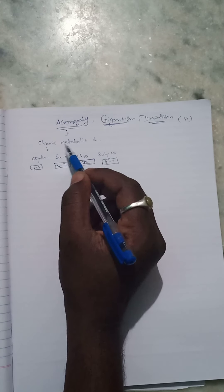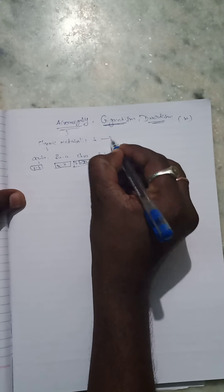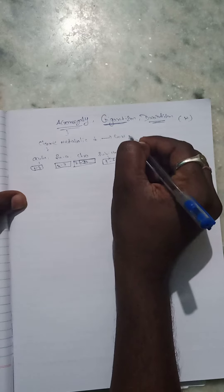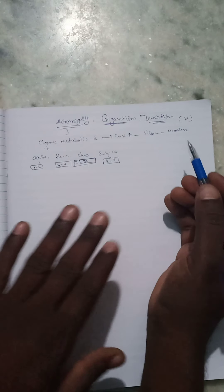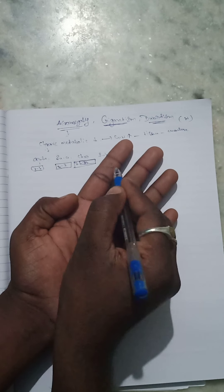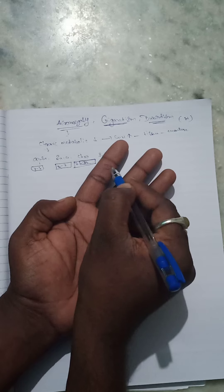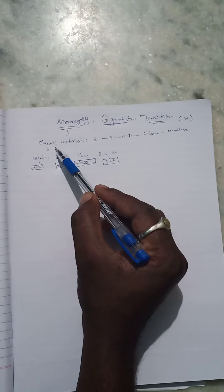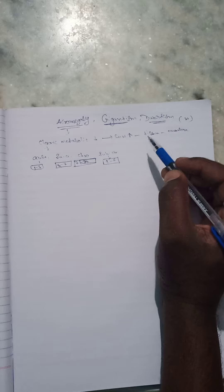Acromegaly is a chronic metabolic disorder in which growth hormone increases too much in the body, and body tissue gradually enlarges. For example, if our finger size is 3 centimeters, during acromegaly it converts to 8 or 9 centimeters. Too much growth hormone in the body leads to acromegaly, and the main symptom is that tissue is enlarged.